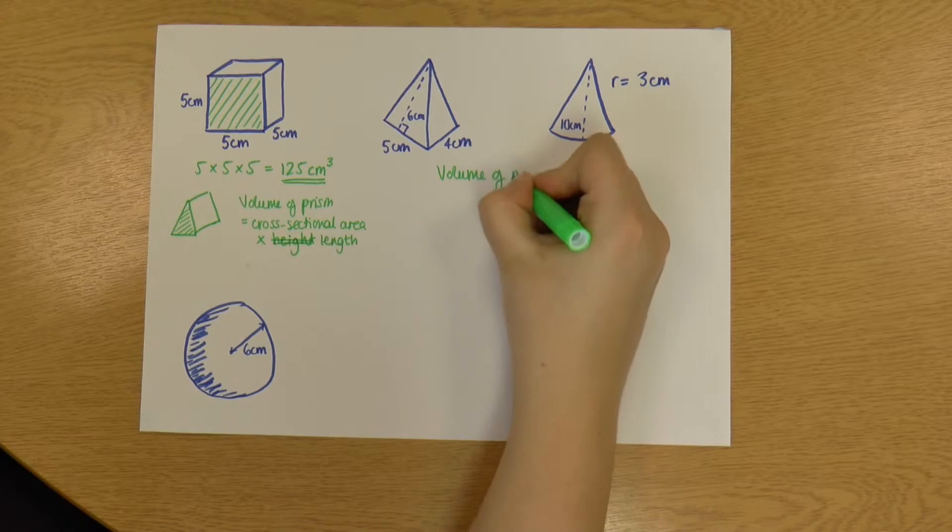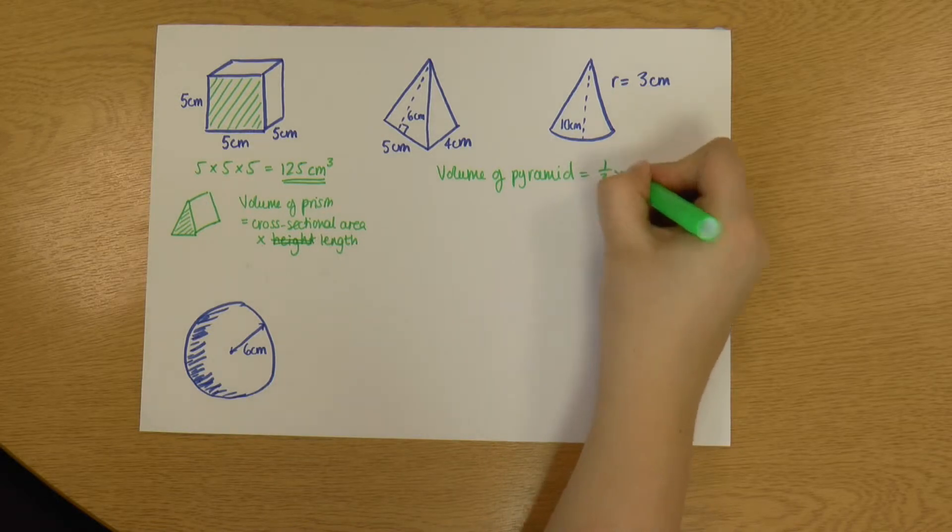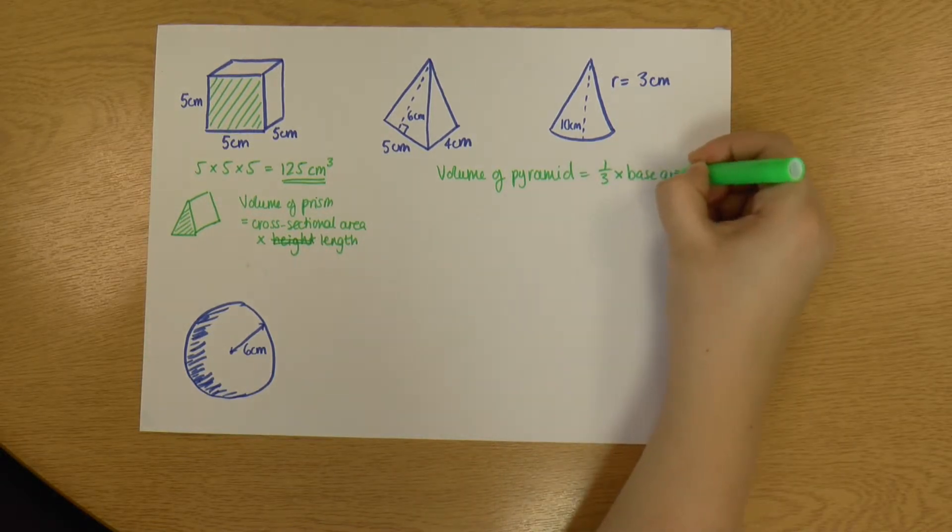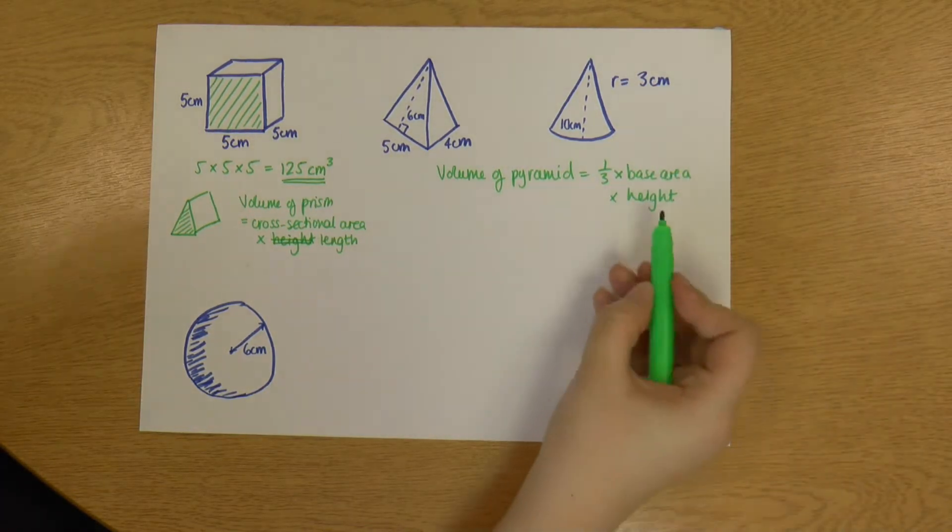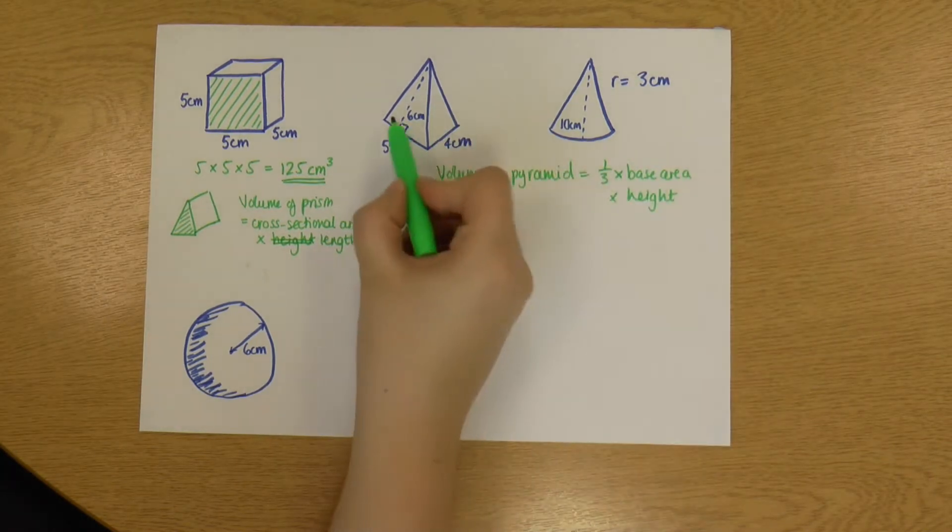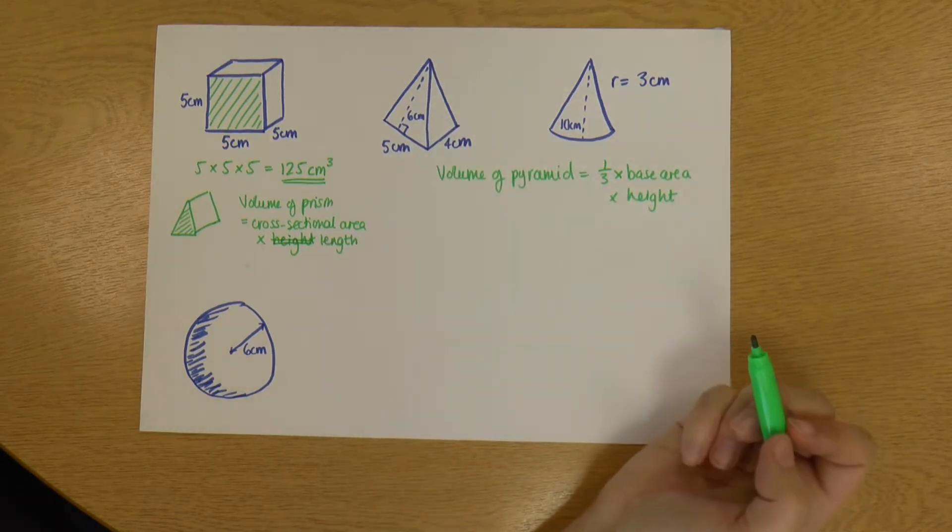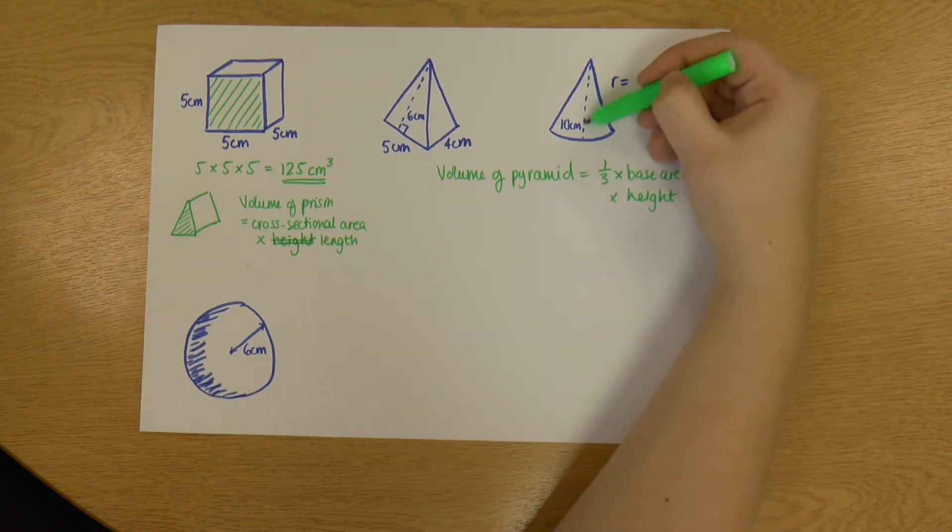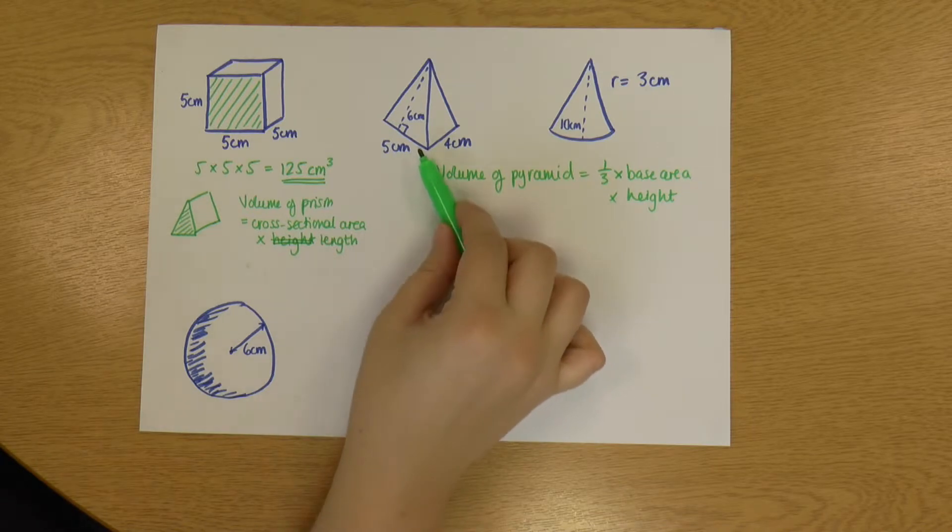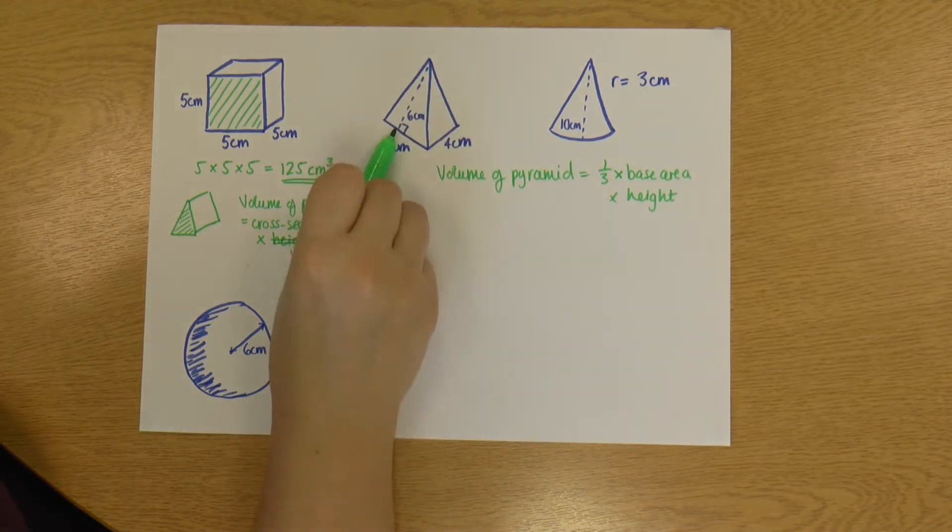So the volume of a pyramid or cone is a third times the base area times the height. So the base area is just the area of whatever the shape is at the bottom. And the height, as we learned in the last video, is from the bottom of the shape to the top. So it's easy to see in the cone, it's this dotted line here.